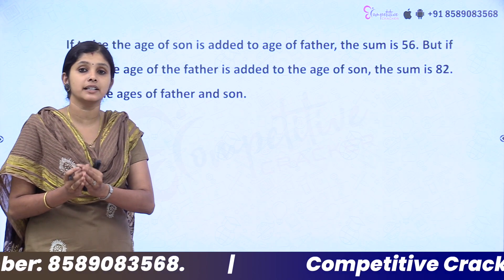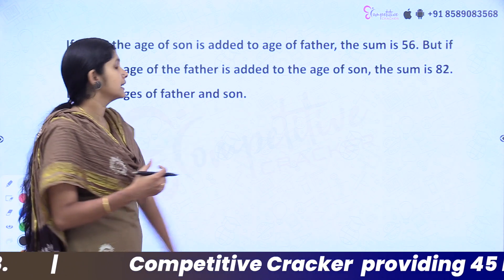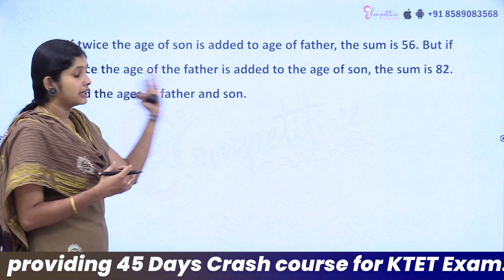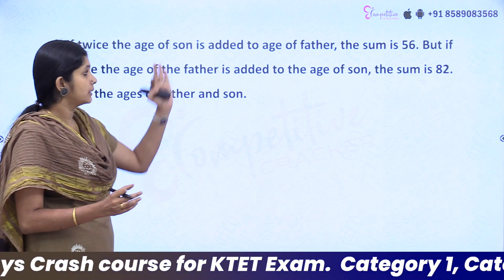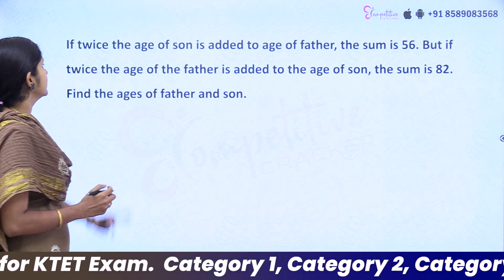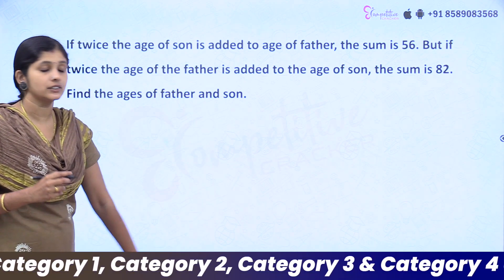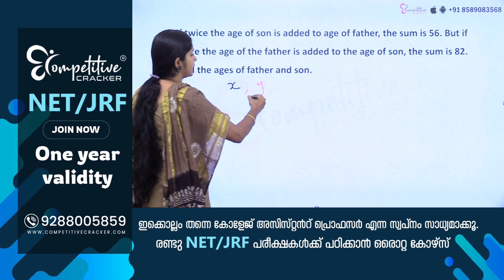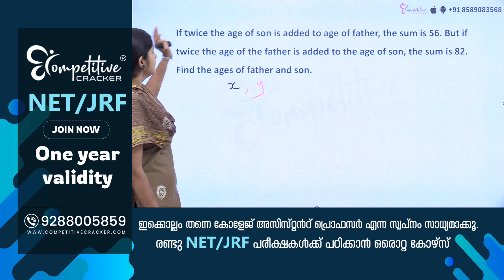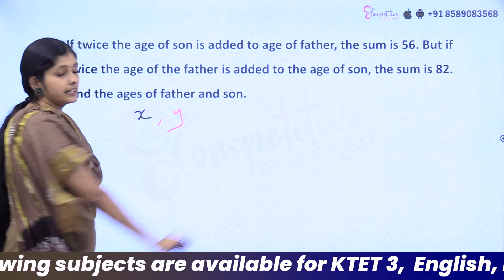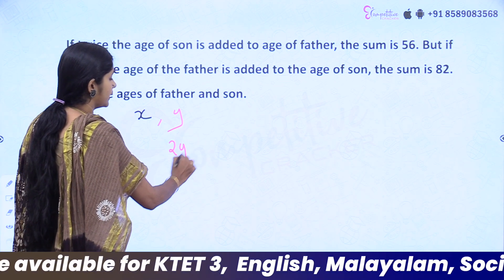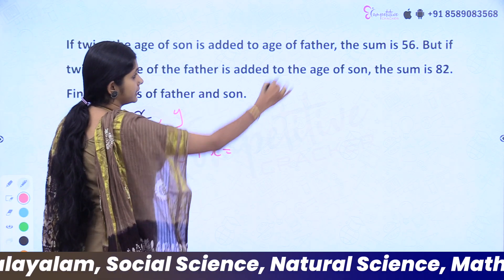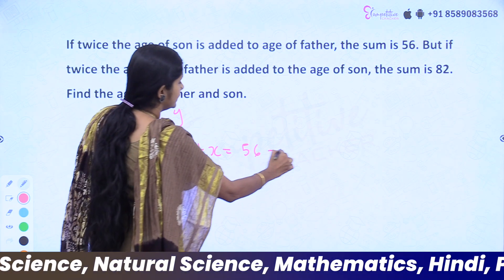Let's set up the equation. Let the father's age be x and the son's age be y. The first condition is: twice the age of the son added to the age of the father equals 56. So the first equation is x plus 2y equals 56.